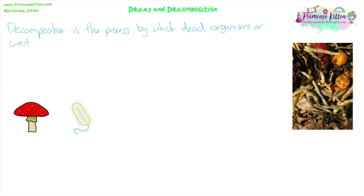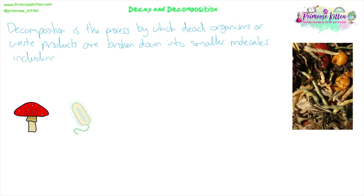Decay is another word we're going to use in this presentation. It's used alongside decomposition, but it describes the process because it means to deteriorate, to get worse, or to decline in quality. So if something is decaying, it is decomposing — it is breaking down. Decay is often used to describe the stages of decomposition, such as actively decaying or slow decay, whereas decomposition is the actual chemical breakdown of waste and dead matter into smaller molecules by enzymes. Food waste that is decomposing may also be called rotting — to rot, to decay, to decompose all mean the same thing here.